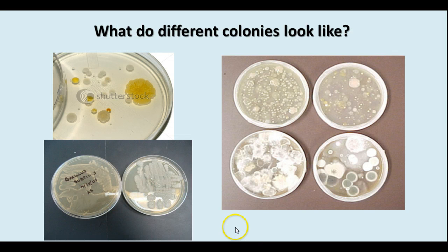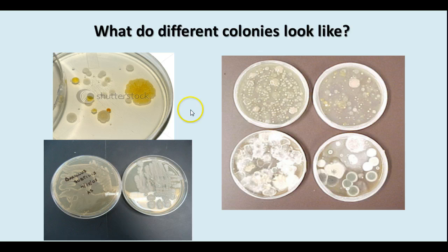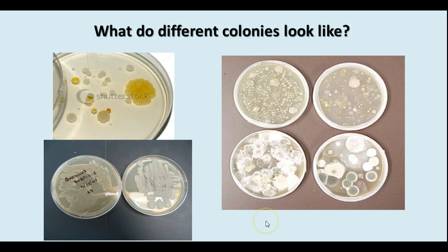What do colonies look like? When you see them on petri dishes, these circular areas are colonies of different kinds. Sometimes they kind of run together. You can identify them sometimes by their color, by their shape, by the type of margin they have, whether they spread out or whether they're bunched up together.